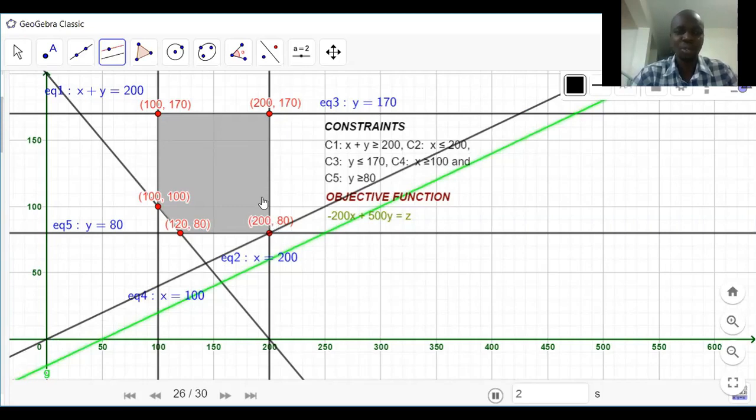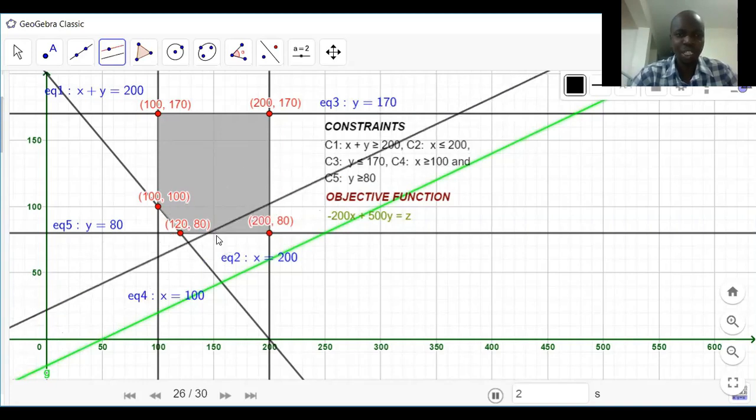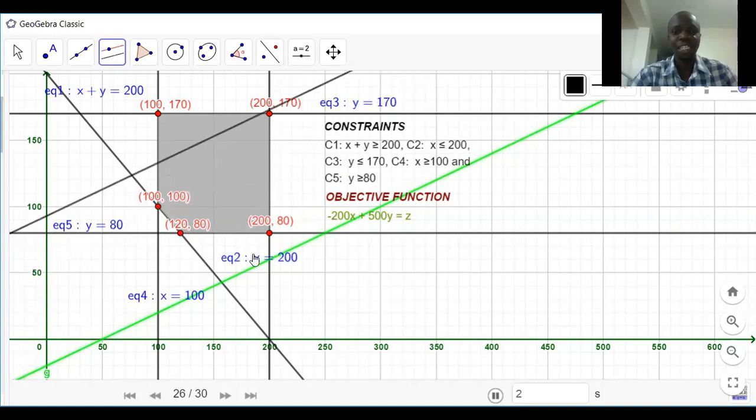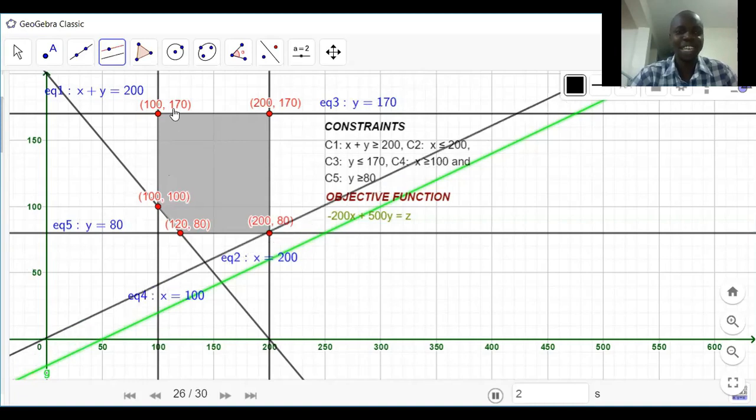Then we continue sliding. It's inside now. We have several points. There is a point here, as you can see. There is a point here. There is another one there. There are so many. We have so many points. But then, we are interested in where it first enters the region and where it leaves the region. Perfect. So this is another one. So as it leaves, this is where it touches. So we take that point. 100 for x, 170 for y. The other one is 200 for x, then 80 for y.